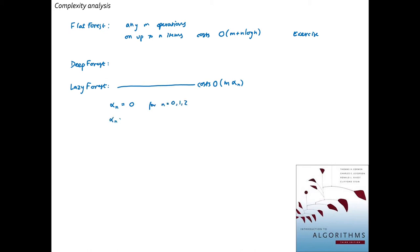Alpha N is equal to 1, for N equals 3. Alpha N equals 2, for N equals 4 up to 7. Alpha N is equal to 3, for N equals 8 to 2047. And alpha N equals 4, for N equals 2048 up to 10 to the 80.